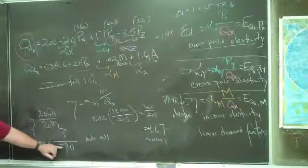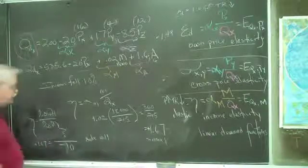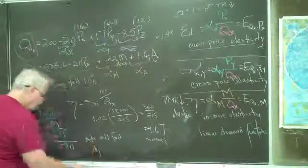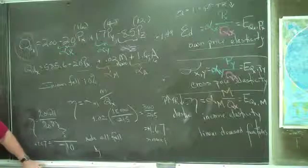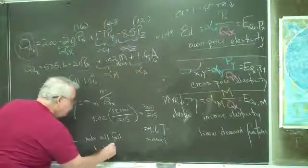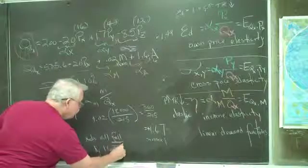They will fall. You're going to have a negative number. Negative times a positive. Sales will fall. By how much? What's 10 times 1.67? Sixteen point seven. Sales will fall by 16.7%.